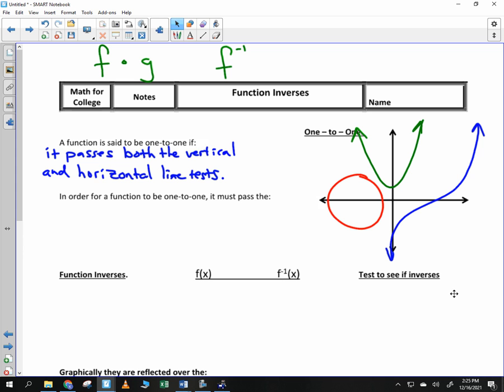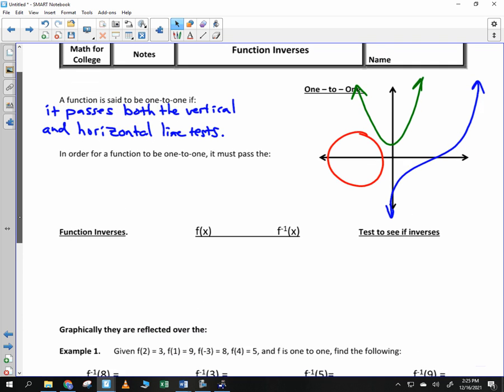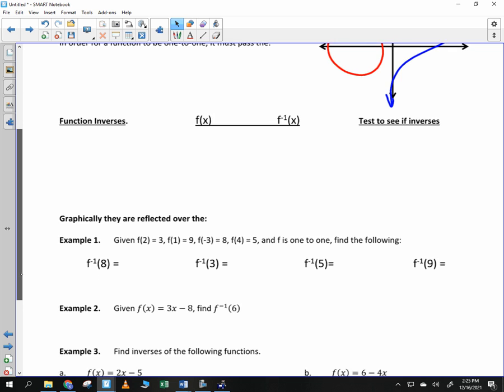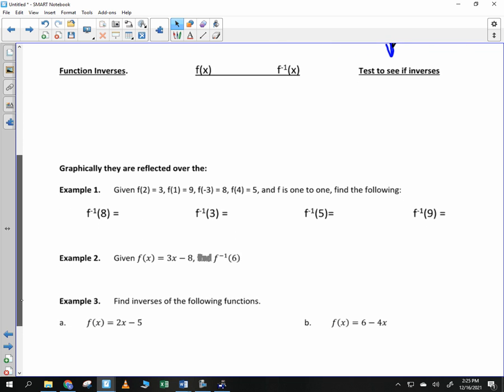So, in order for a function to be one-to-one, it must pass the horizontal and vertical line test, just like I wrote there. So, are we ready to move on? All right.